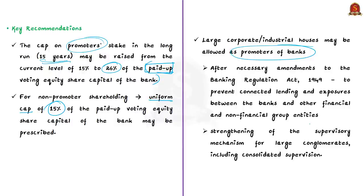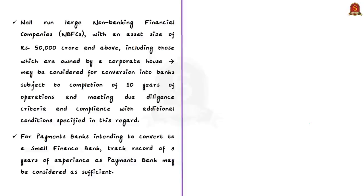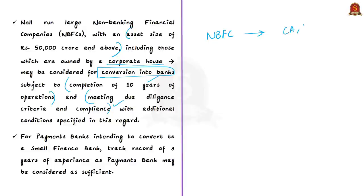The next recommendation is on well-run large non-banking financial companies (NBFCs). For NBFCs with an asset size of 50,000 crore rupees and above — including those owned by corporate houses — the IWG recommended considering their conversion into banks, subject to completion of 10 years of operations and meeting due diligence criteria and compliance of RBI. An NBFC is a company registered under the Companies Act of 1956, engaged in loans and advances, and acquisition of shares, stocks, debentures, and securities issued by government or local authority.